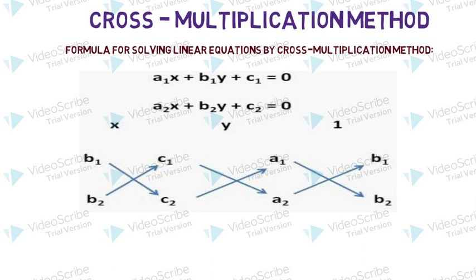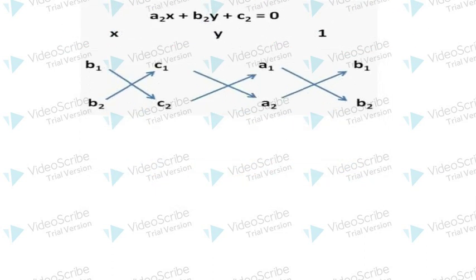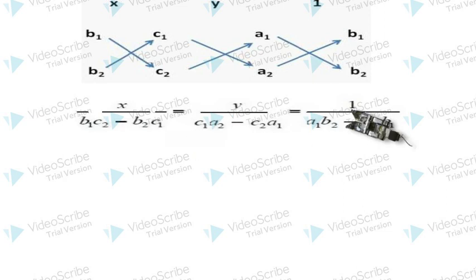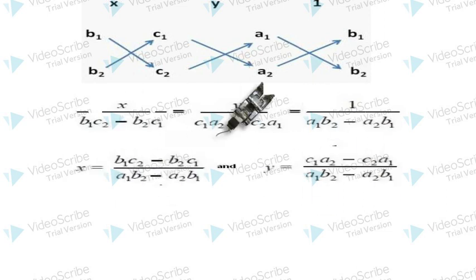In the second equation, the coefficient of x is a2, coefficient of y is b2, and c2 is the constant. We will do cross multiplication here, and after cross multiplication we will get this formula: